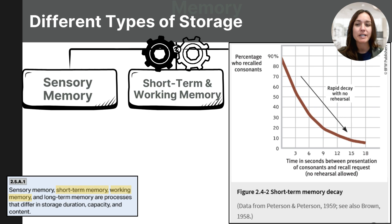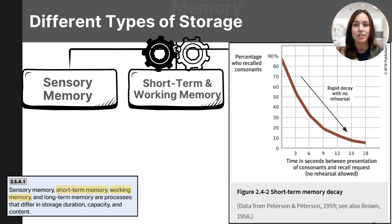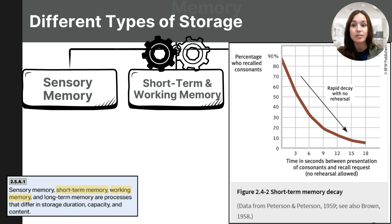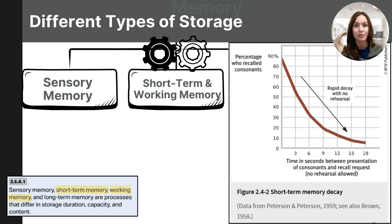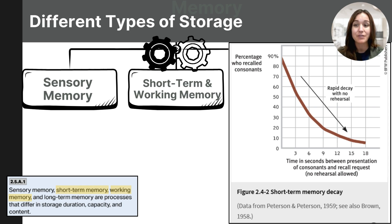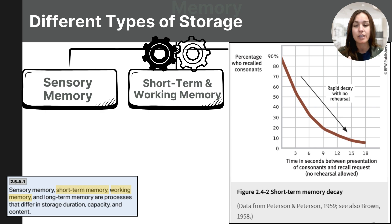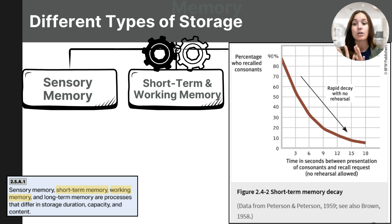So how quickly do our short-term memories disappear? Lloyd Peterson and Margaret Peterson asked people to remember three consonant groups such as C, H, J. To prevent them from rehearsing those items, the researchers distracted participants by asking them to start at 100 and count aloud backwards by three. After about three seconds, participants recalled the letters only about half the time. After 12 seconds, they seldom recalled the letters at all. You can see this memory decay on the chart labeled figure 2.4-2. Without active processing, short-term memories are very limited and do not last very long.